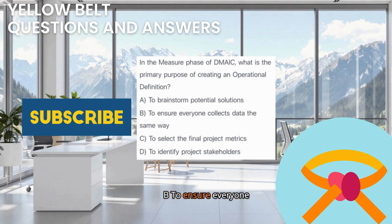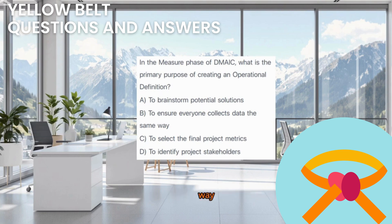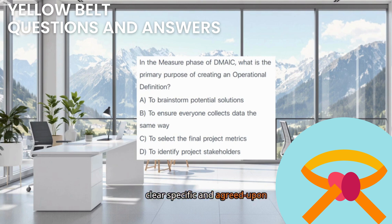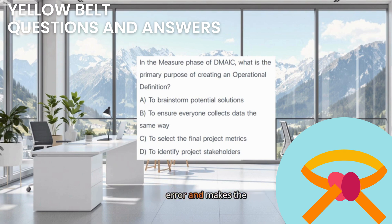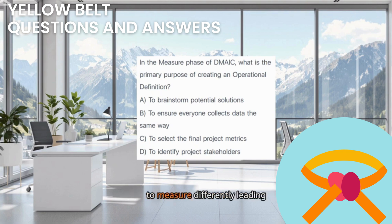The correct answer is B — to ensure everyone collects data the same way. An operational definition is a very clear, specific, and agreed-upon description of what you are measuring and exactly how to measure it. This eliminates ambiguity and ensures that everyone involved in data collection does it consistently, using the same criteria and method. This reduces measurement system error and makes the data collected much more reliable for analysis. Without operational definitions, different people might interpret what to measure differently, leading to inconsistent and inaccurate data.